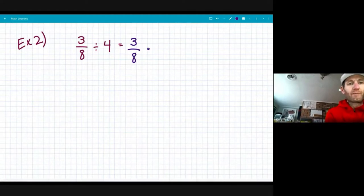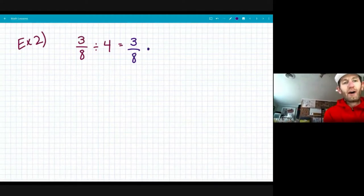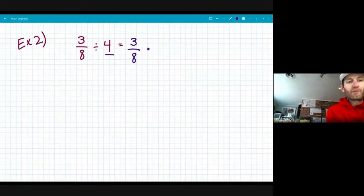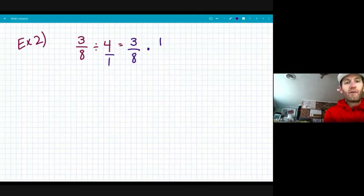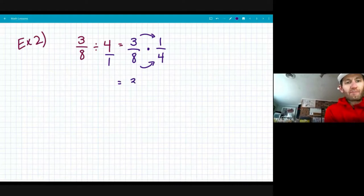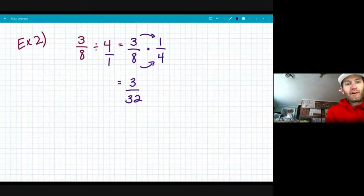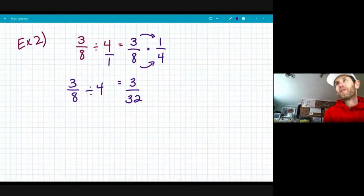Change my operation to multiplication, and I'll be multiplying by the reciprocal of four over one, which is one fourth. So when I go ahead and do my standard issue multiplication of fractions, three times one is three and eight times four is 32. So three eighths divided by four equals three thirty-seconds.